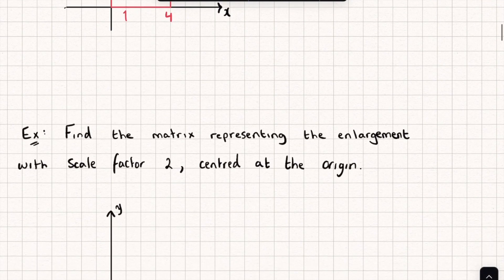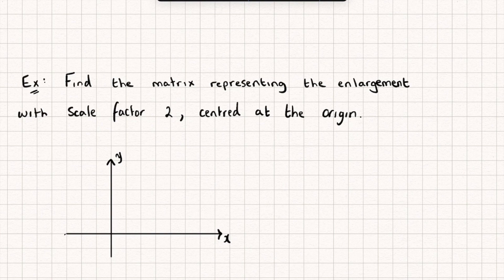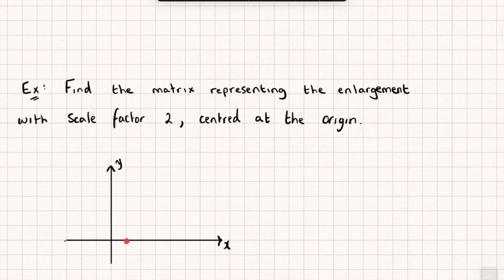Let's look at another example now. Here we need to find the matrix representing an enlargement scale factor two centered at the origin. Again, we look at what happens to the i and j unit vectors. It's very similar except this time our i unit vector goes to the point (2,0) and the j unit vector (0,1) is doubled to become (0,2), so my transformation matrix is 2, 0, 0, 2.